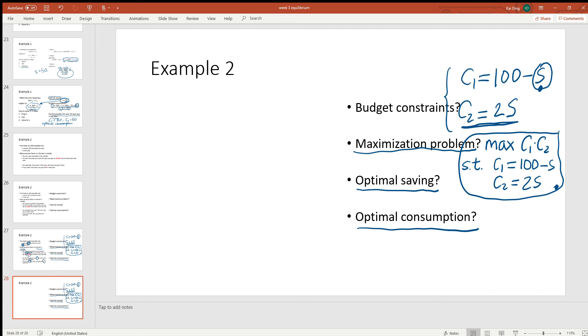Okay, remember the three-step procedure. Step number one: plug in. So plug the budget constraints into our happiness. Maximize c1 times c2. That's the same as maximize, what is c1? Well, c1 is 100 minus s. And then c2, what is c2? c2 is 2s. You can put a parenthesis around them to make it a little bit more neat and so that you don't make algebra mistakes.